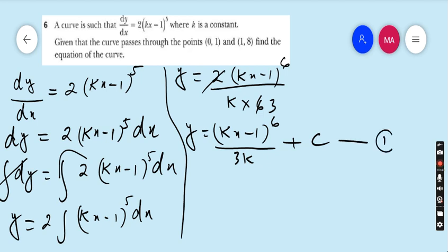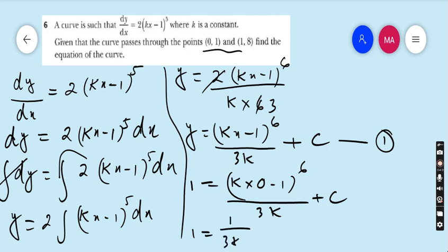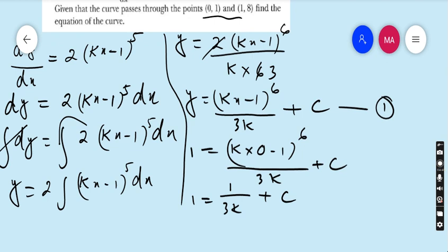Now we have to find the values of two constants k and c. In order to find the constants, we must satisfy this equation number one with (0,1) and (1,8). First I am satisfying with (0,1): 1 equals (k×0 - 1) to the power 6 upon 3k plus c.